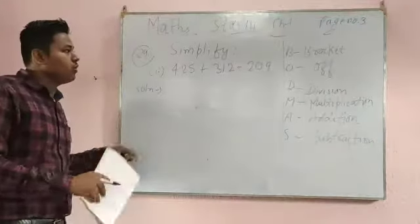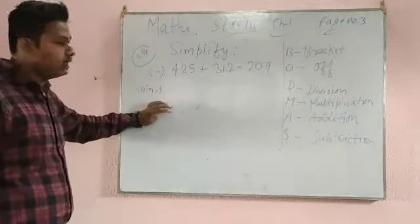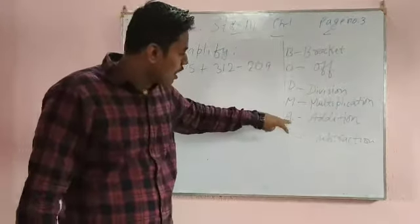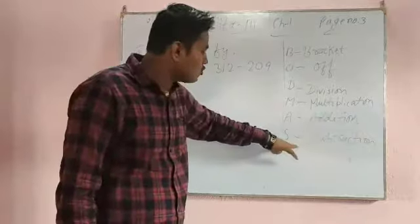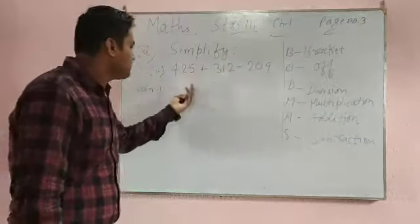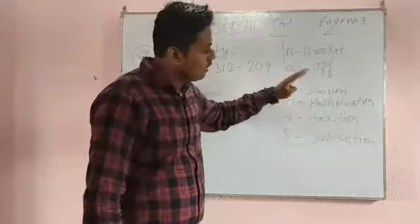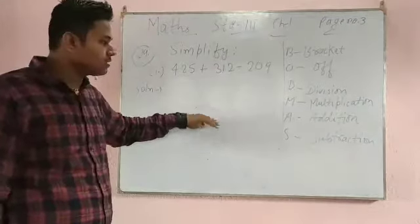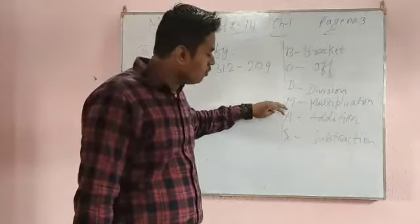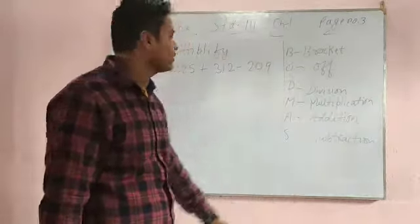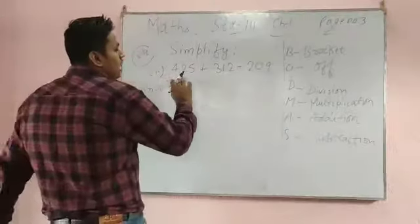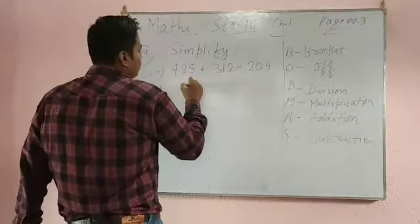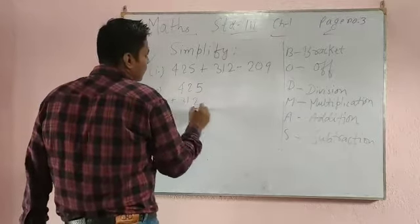O means of, D means division, M means multiplication, A means addition, S means subtraction. This is the full form of BODMAS. Now you can see here is add and minus. BODMAS says first you have to do addition, then in last you have to do subtraction. If there is multiply, do multiply first, then addition, then subtraction.